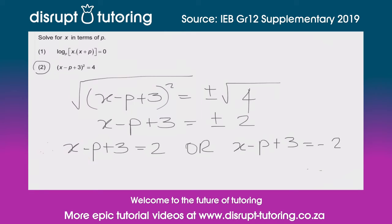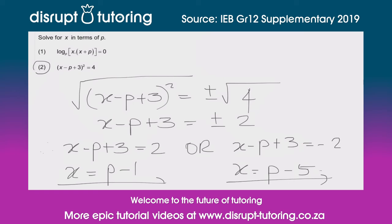Now we solve for x. For the first case, x equals p minus 1. For the second case, we take the 3 across, giving us x equals p minus 5. Those are the two answers for x in terms of p.